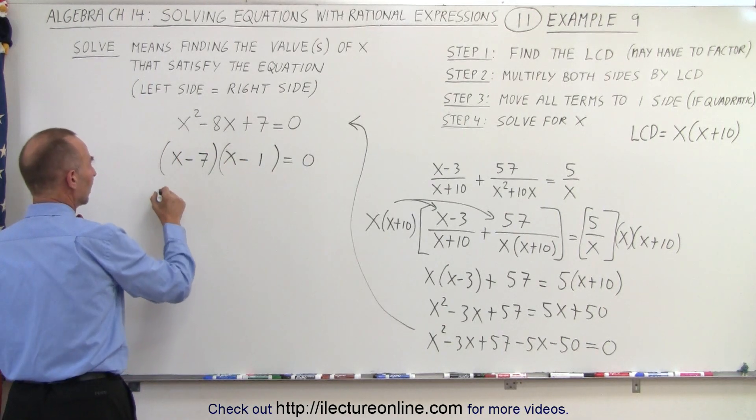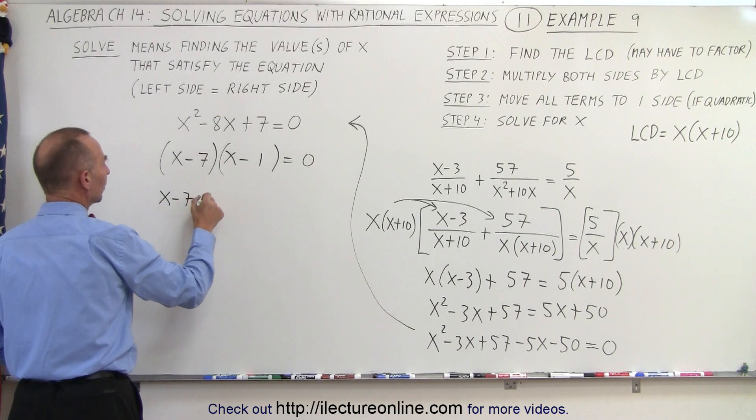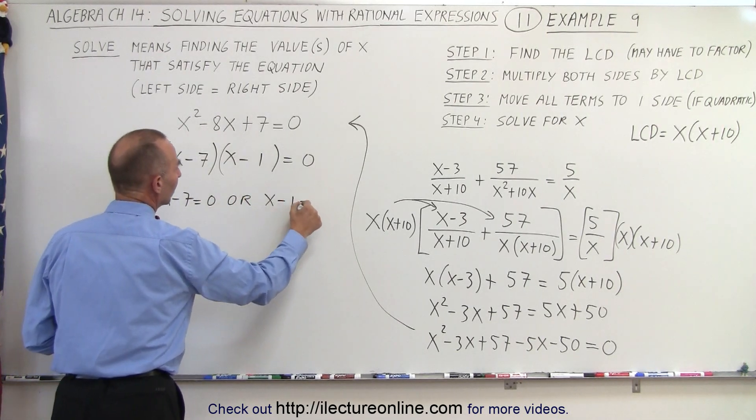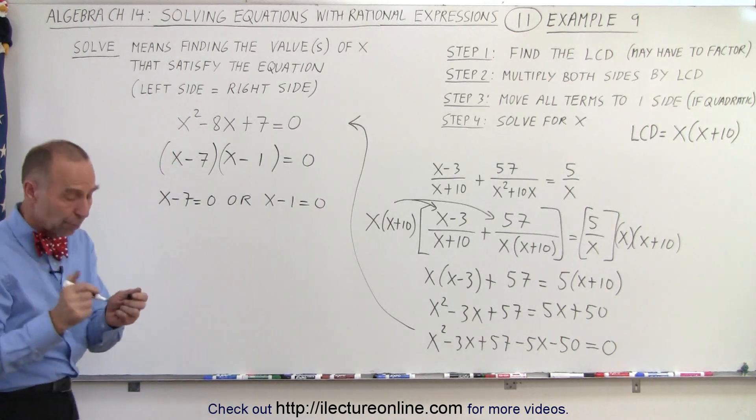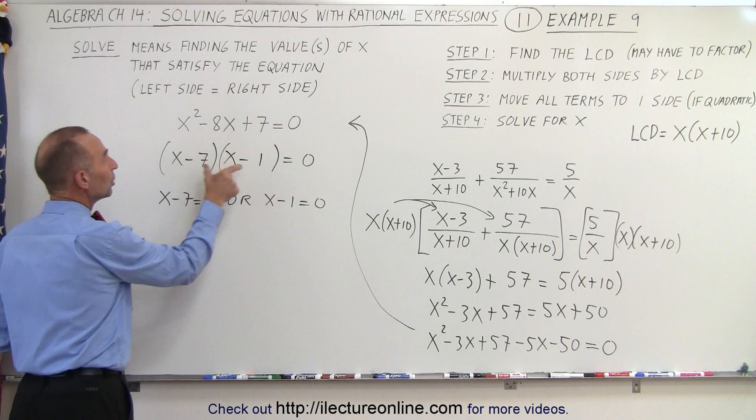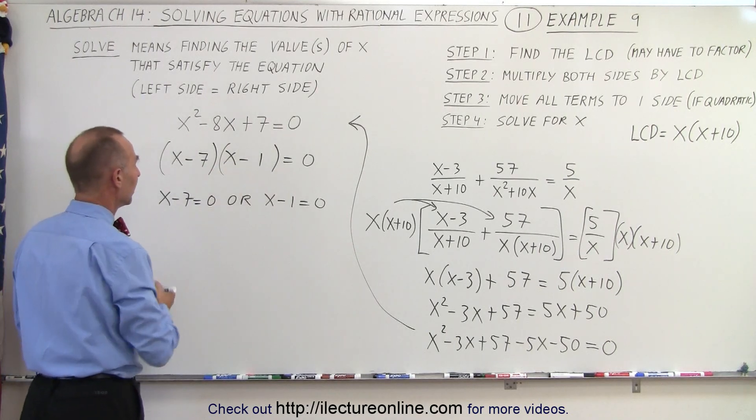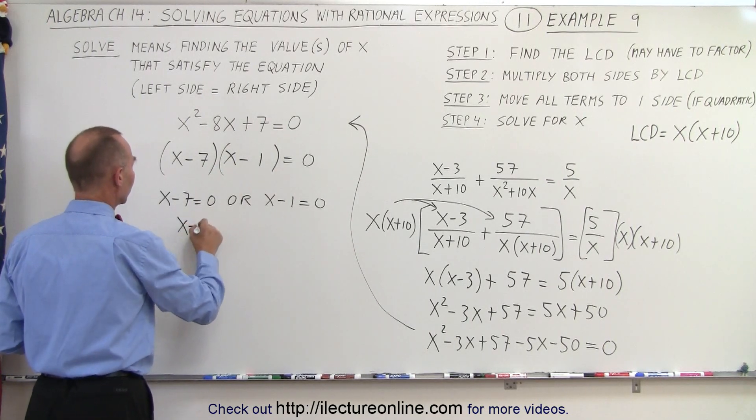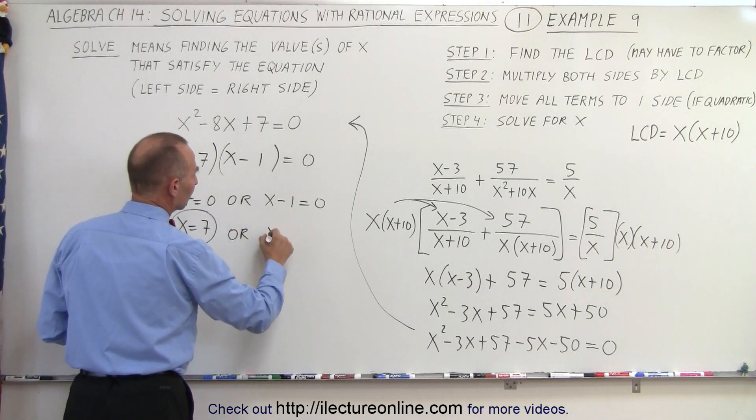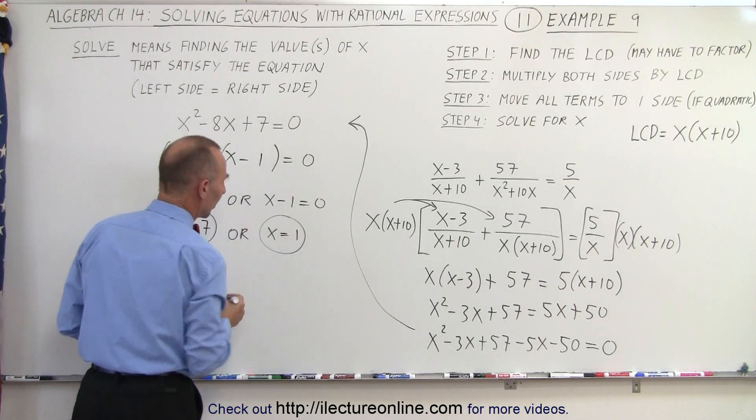So here we can conclude that either x minus 7 equals 0 or that x minus 1 equals 0. Because when we multiply two binomials together and the product is 0, that means either one or the other binomial must be 0. Which means that x equals 7 is one possible solution or x equals 1 is another possible solution.